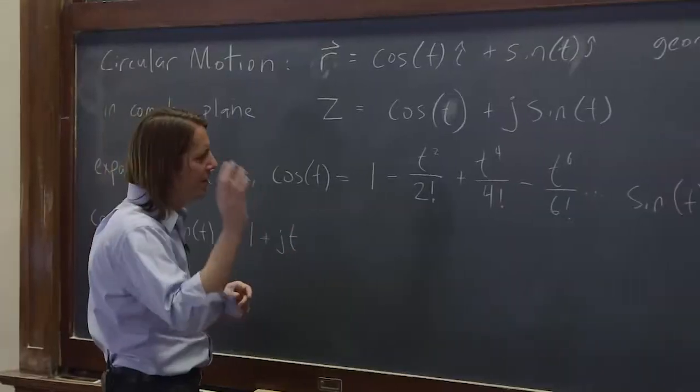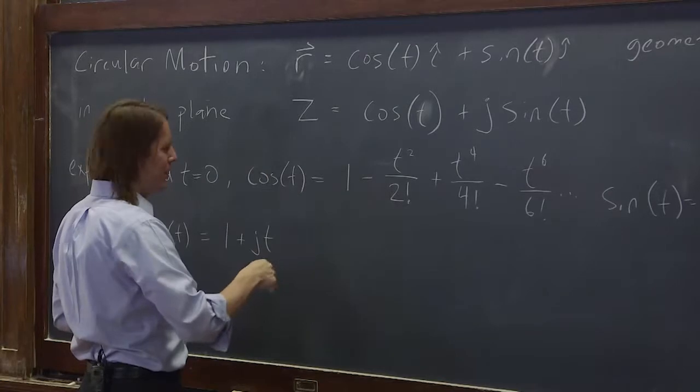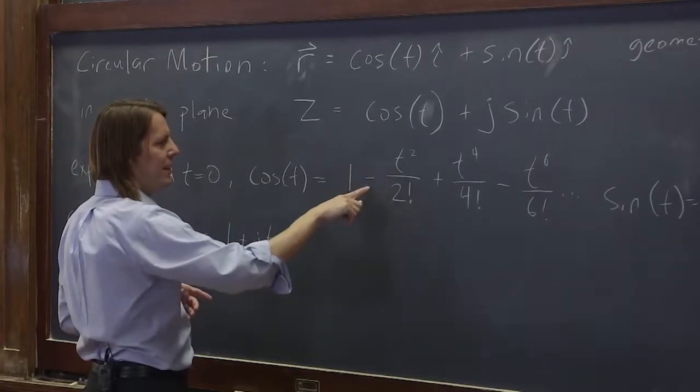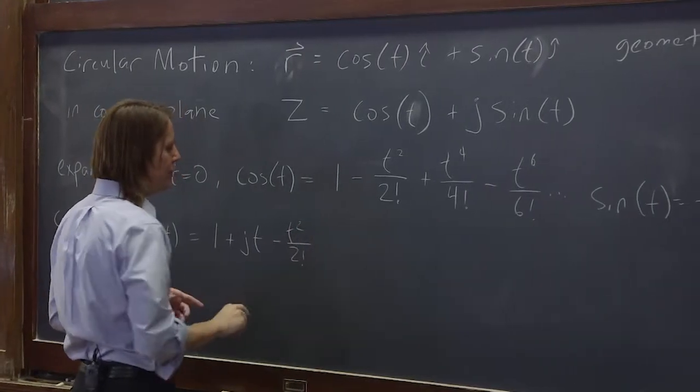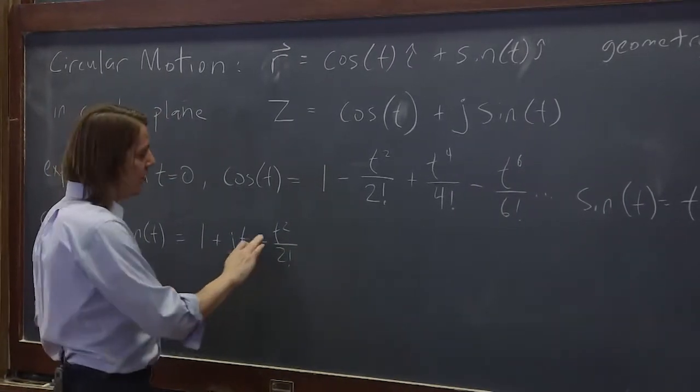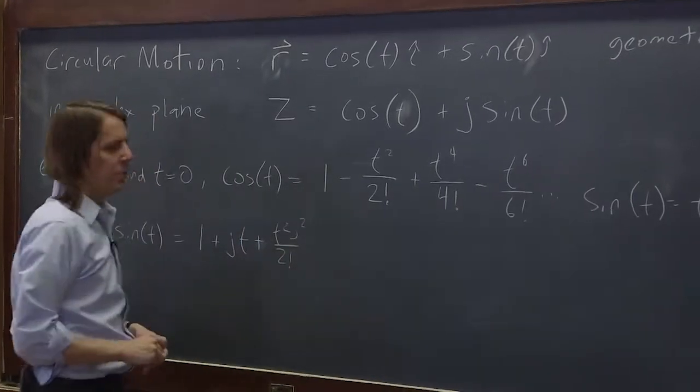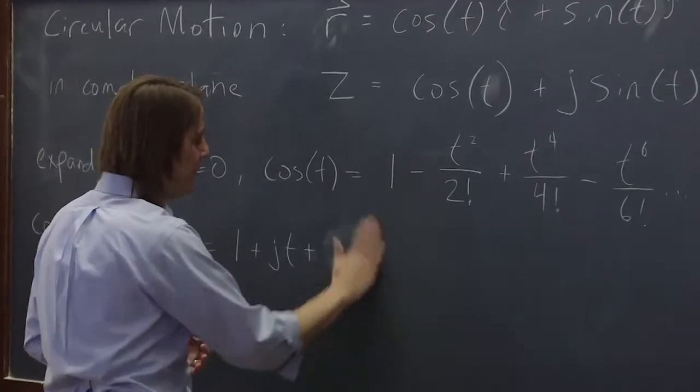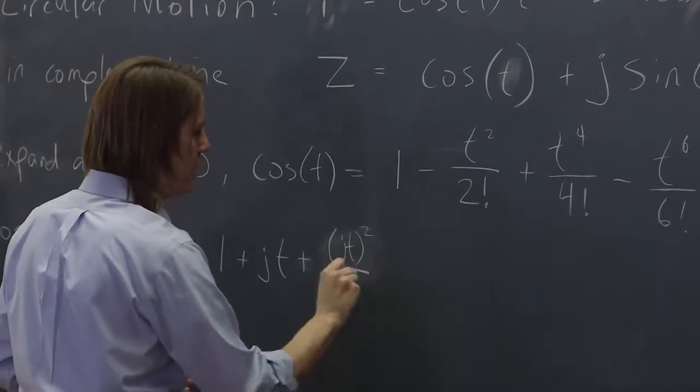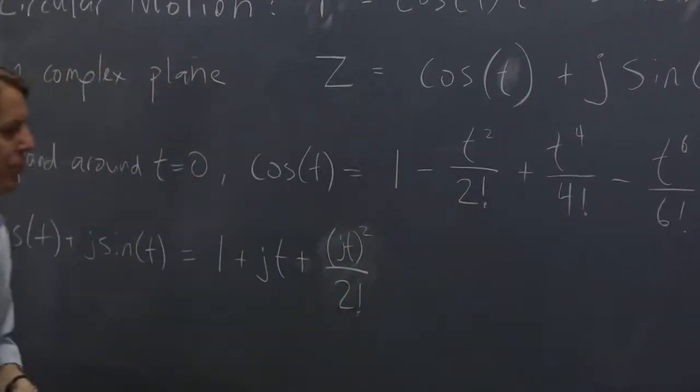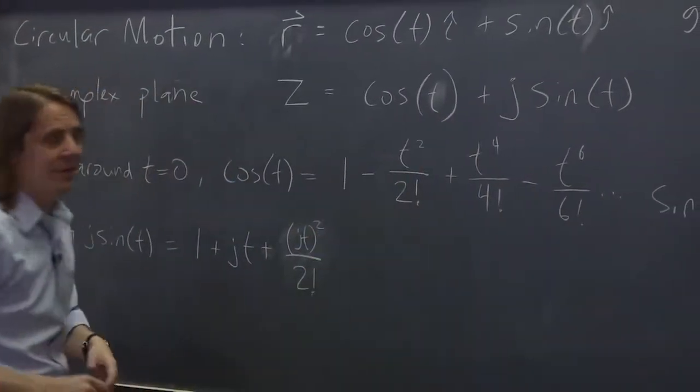And then the next one would be the t squared term, so it would be here. It would be minus t squared over two factorial. But that minus is equal to what? If we wanted to put - we could put minus t squared over two factorial, but minus one is actually j squared. So we could say it's plus t squared j squared over two factorial, or we could do like this: we could say it's plus jt squared over two factorial. That's the same thing. So we can stick j's in here as long as we square them and they stay real.